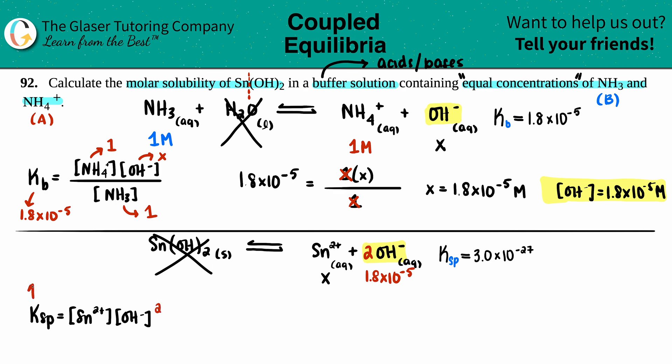Ksp is 3.0 times 10 to the negative 27th. Sn is the x and OH is 1.8 times 10 to the negative fifth.